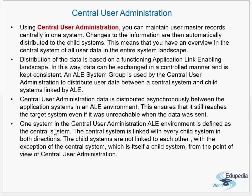One system in the CUA ALE environment is defined as the central system. The central system is linked with every child system in both directions. The child systems are not linked to each other, with the exception that the central system itself is also a child system from the point of view of CUA. The central system is linked to each child system bidirectionally.